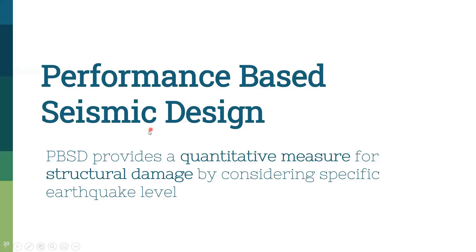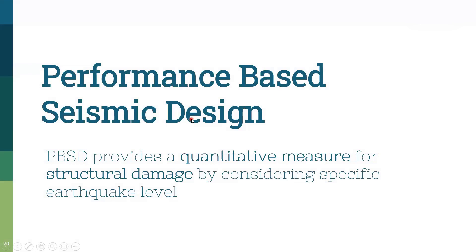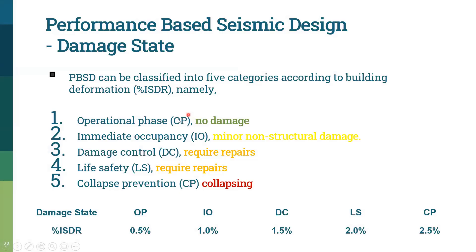The performance-based seismic design. We know that we get the ground motion. How can I measure the damage of the structure? There's five categories in the performance-based seismic design. The five categories are operational phase, immediate occupancy, damage control, life safety, and collapse prevention. Each damage stage has its own percentage drift. The OPE has 0.5% drift. The IO has 1% drift. The damage control, 1.5% drift. The life safety, 2% drift. The collapse prevention has 2.5% drift. So each damage state has its own percentage drift ratio.